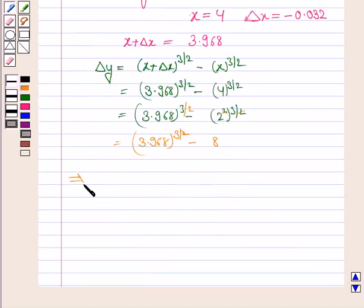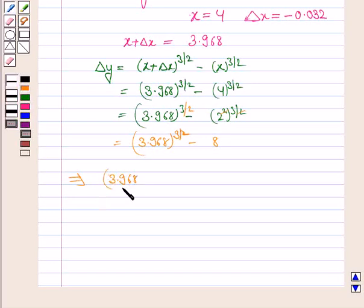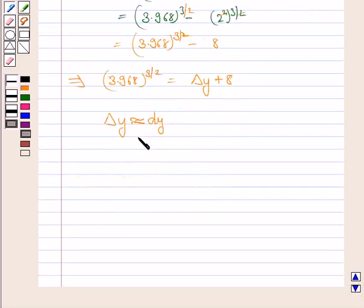So here 2 gets cancelled with 2 and we have 3.968 to the power 3 by 2 minus 8. So this implies 3.968 to the power 3 by 2 equal to delta y plus 8. Now we know that delta y is approximately equal to dy and dy is equal to dy by dx into delta x.